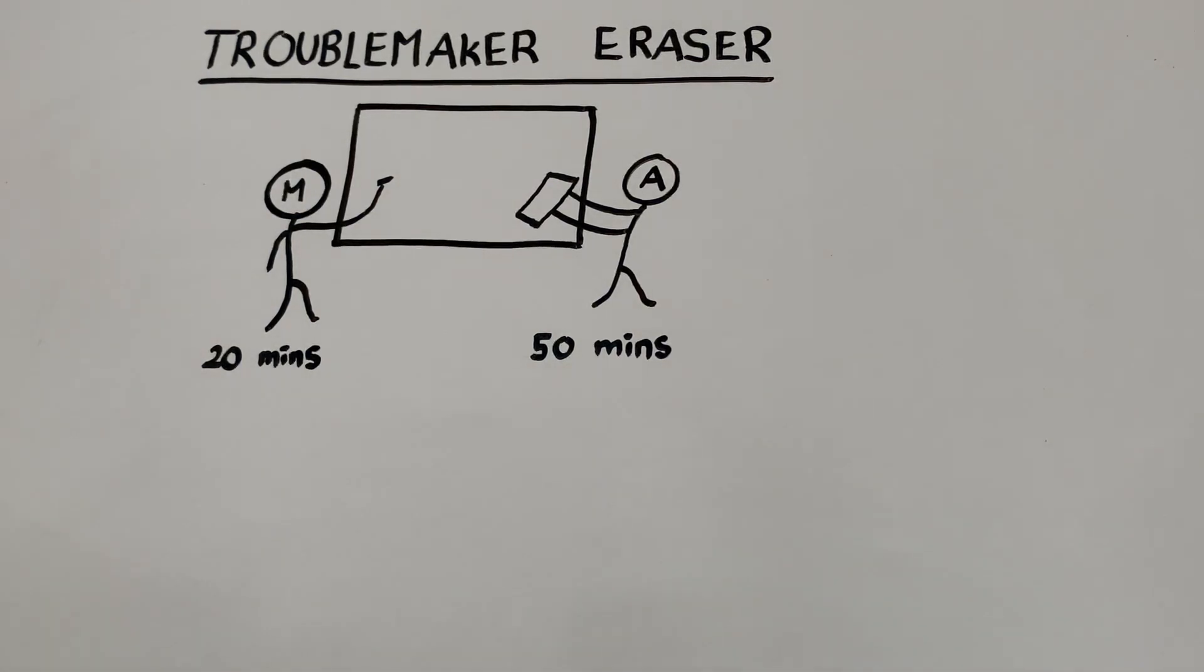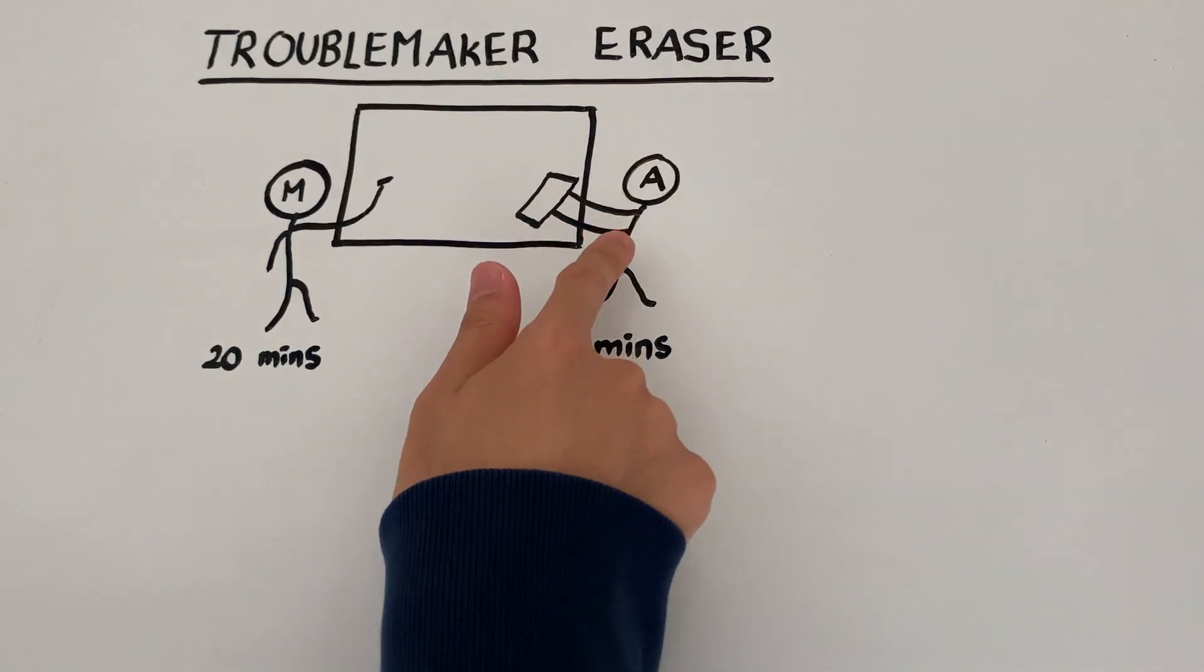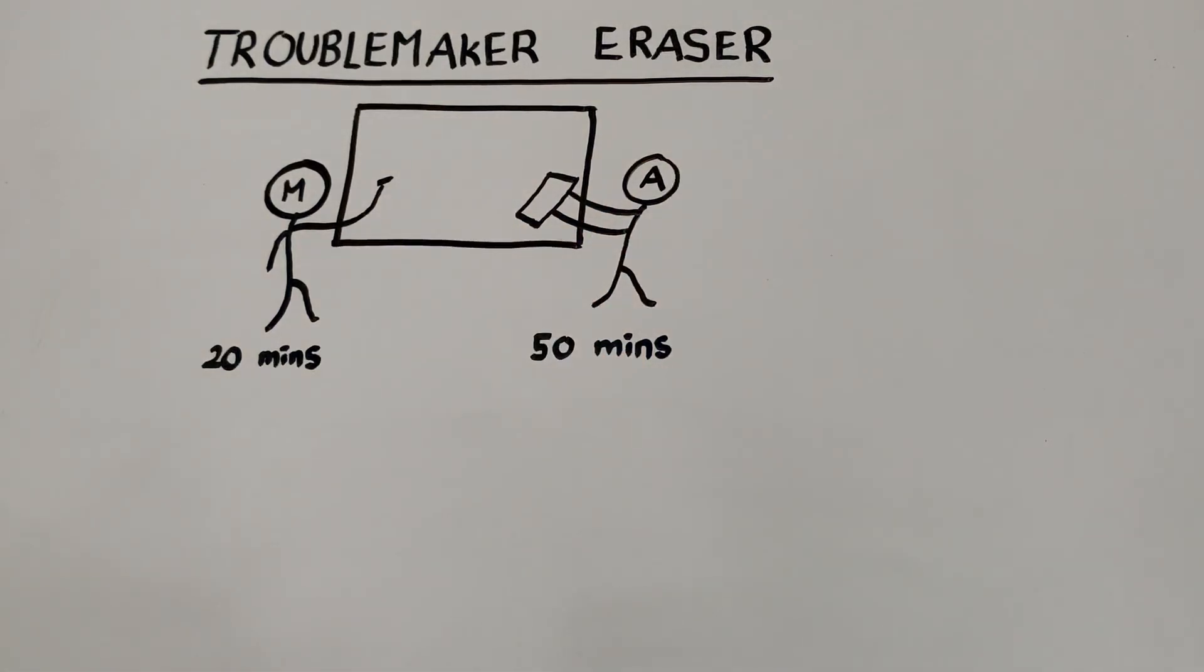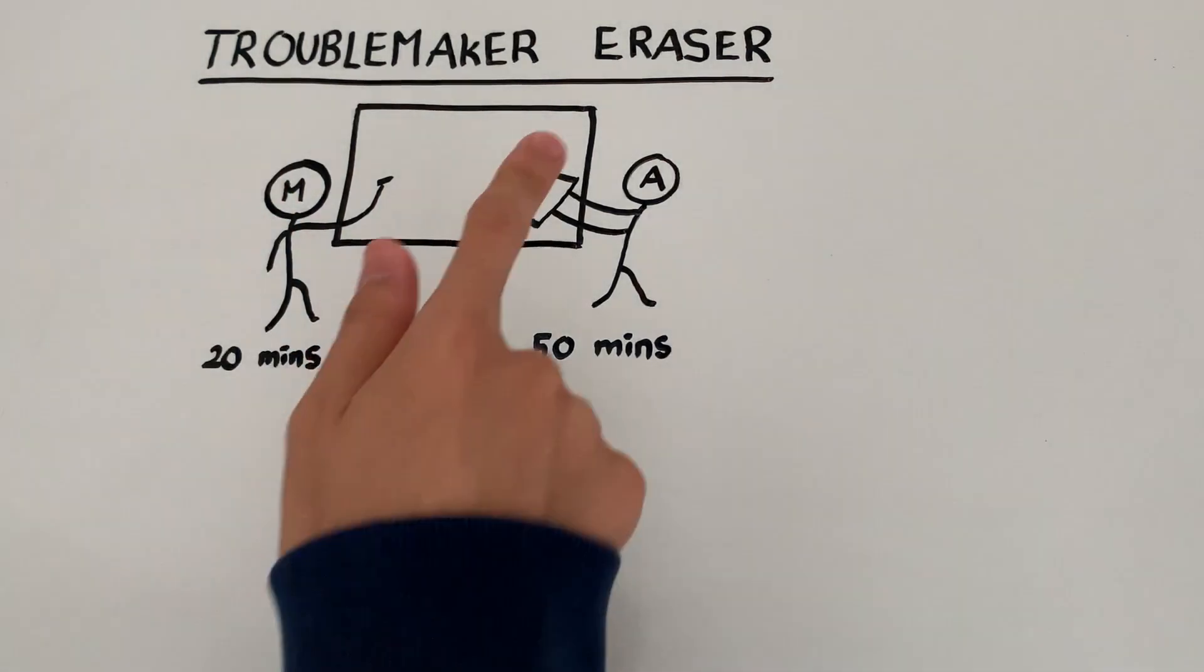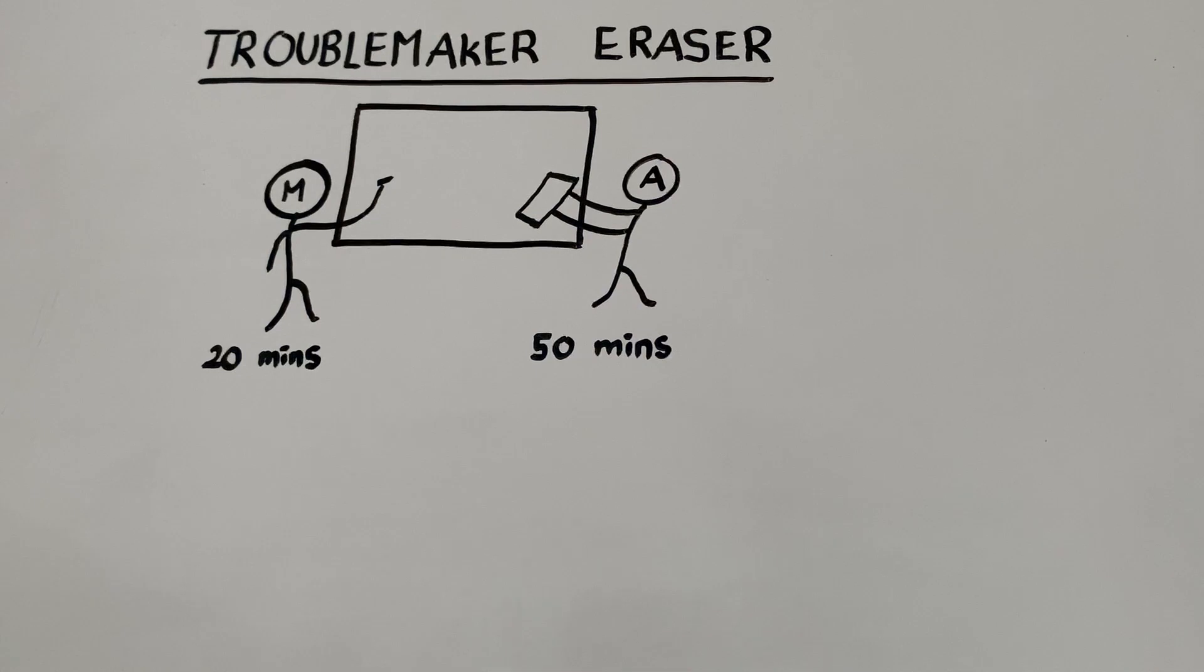Unfortunately for Mark, however, today he is not alone. Today, he is with Adam. Now, Adam is a troublemaker, because while Mark is writing on the chalkboard, Adam is erasing the board at the same time, and it usually takes Adam 50 minutes to erase an entire board by himself.